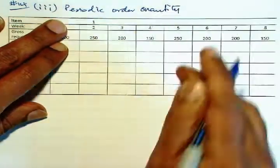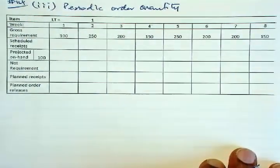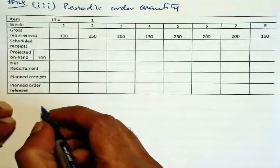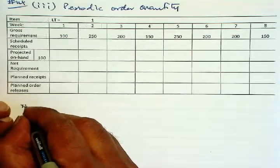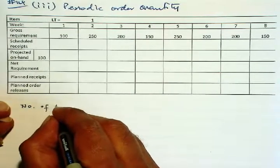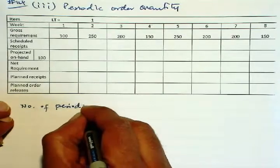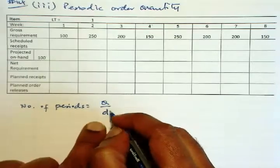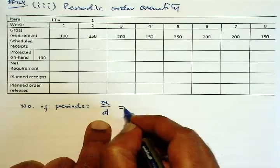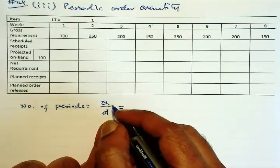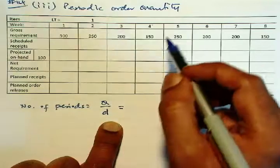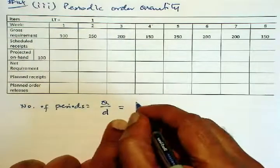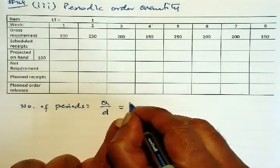So the first step in periodic order quantity is to take Q. We have to first find the number of periods to combine. Number of periods is given by Q over D, the demand rate. So how long would the order quantity, the EOQ quantity last? We'll be converting EOQ into number of periods. So this Q is EOQ.